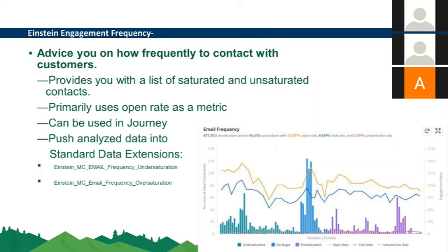This feature can also be used in Journey Builder, allowing you to send different communications to saturated versus unsaturated customers. It automatically creates two data extensions in Marketing Cloud — one for under-saturated contacts and one for over-saturated contacts — which you can use for future communications. Note: at this point, these two data extensions are not yet enabled in our account; I am working with Salesforce to get this enabled.